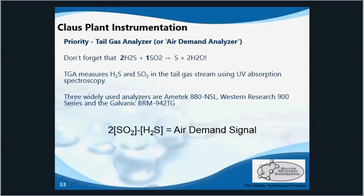Certain tail gas analyzers can also measure the COS and CS2 concentrations in the tail gas. Although we're attempting to maintain an H2S to SO2 ratio of 2 to 1, we can't use that ratio for the combustion air control algorithm because that ratio is exponential — it's nonlinear. So for our air demand, we need to use the formula at the bottom, which is a linear formula where you can plug in your ratio and get your signal.